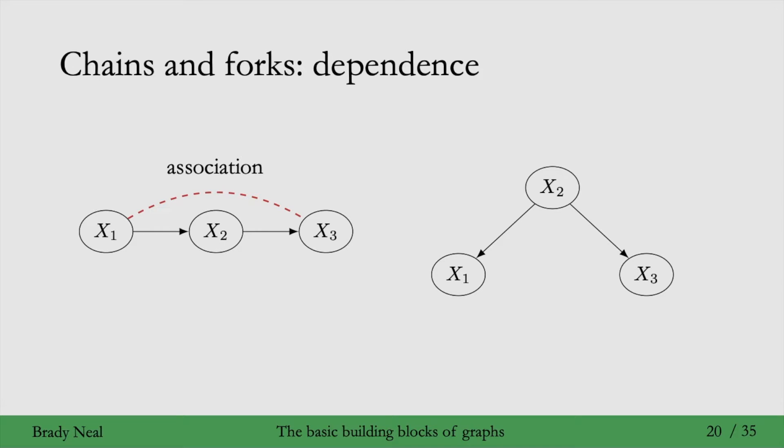Similarly, in forks, x1 and x2 are dependent from minimality or the causal edges assumption, and then the same with x2 and x3. And what about x1 and x3? It turns out that they are also associated.